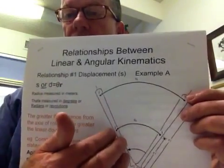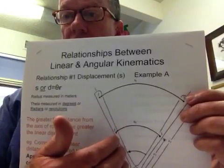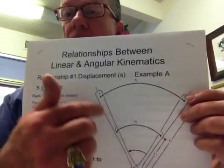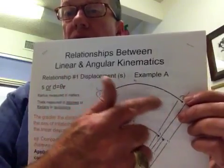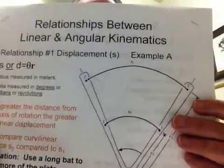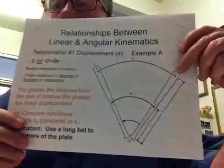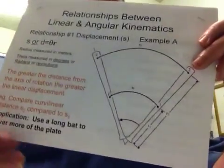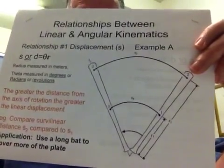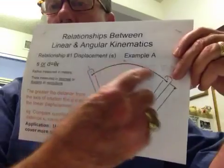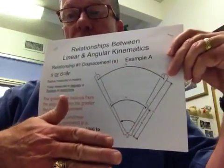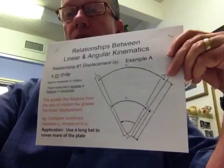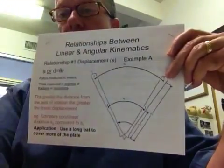If the angle is held constant, the farther you are out on the bat, the greater the displacement. For a baseball or softball hitter, the longer bat you use, the greater the linear displacement. In baseball parlance, you can cover the outside part of the plate because you have greater linear displacement.